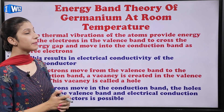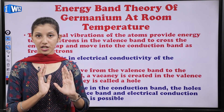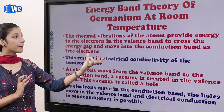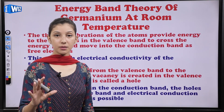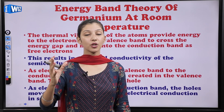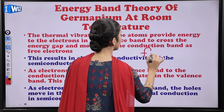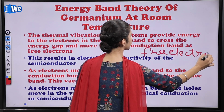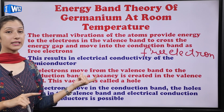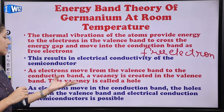Energy band theory of germanium at room temperature: the thermal vibrations of the atom provide energy to the electrons in the valence band to cross the energy gap and move into the conduction band as free electrons. At room temperature, valence electrons move into the conduction band and become free electrons, resulting in electrical conductivity of the semiconductor. As electrons move from the valence band to the conduction band, a vacancy is created in the valence band.